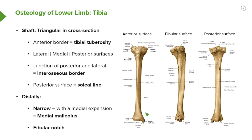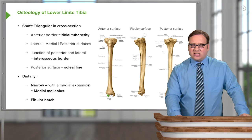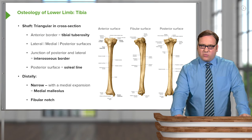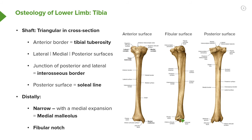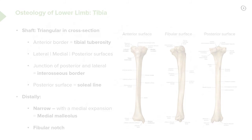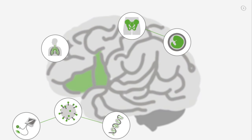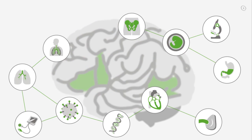Distally we have a narrowing of the tibia before the medial expansion which is the medial malleolus, and laterally we have the fibular notch, which allows for articulation with the fibula. In the fibular view we can see this depression — the fibular notch — that houses the fibula.